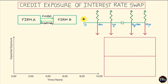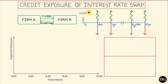Let me position myself at time 0 — the point at which this swap has just been initiated. If this swap were equally fair to both parties, then as of this point in time, the value of this swap from A's perspective should be equal to zero. If it's a fair swap, then as of its inception date, it should start off at a zero value.